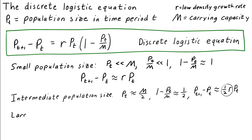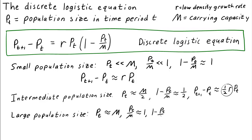If we have a really large population size — say right around the carrying capacity — then the ratio p_t over m is pretty close to 1, so the factor 1 minus p_t over m is almost 0. The logistic growth equation becomes p_{t+1} minus p_t equals r times p_t times approximately 0. When the population size reaches the carrying capacity, the growth has slowed down to nothing. This means that the carrying capacity m is an equilibrium of the equation.